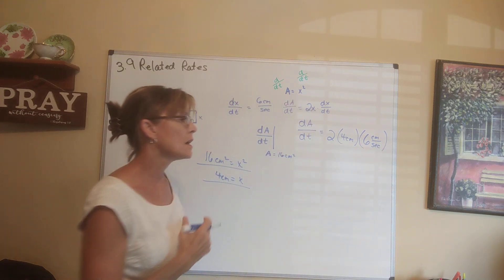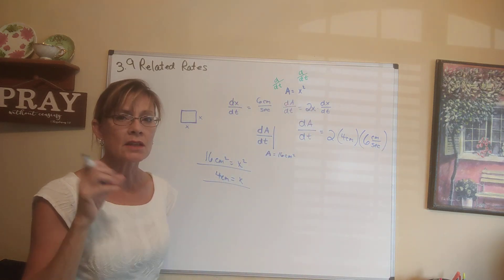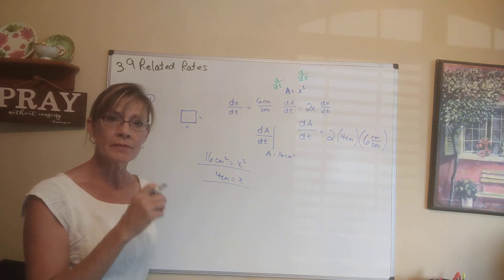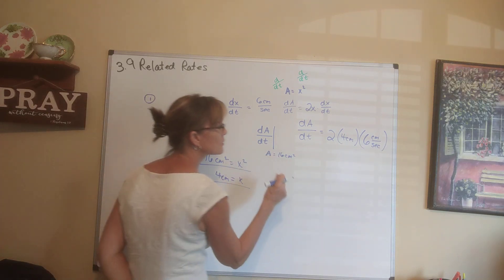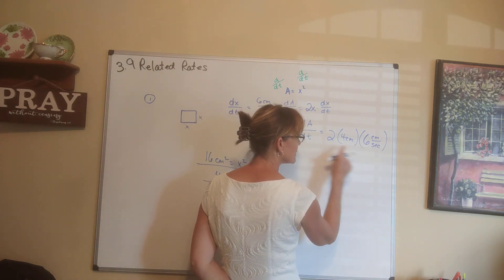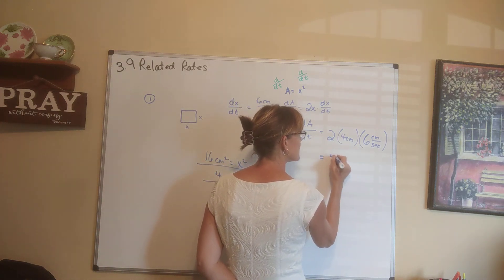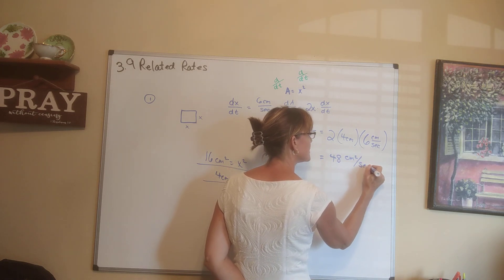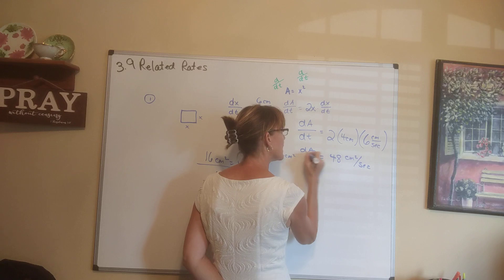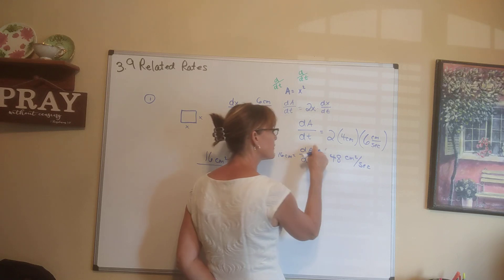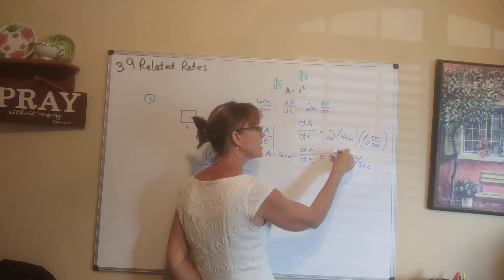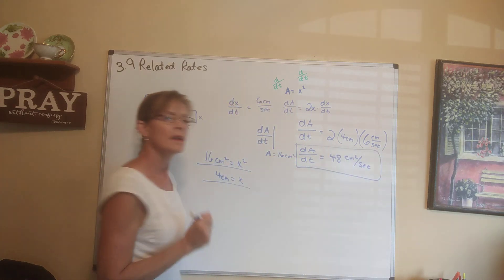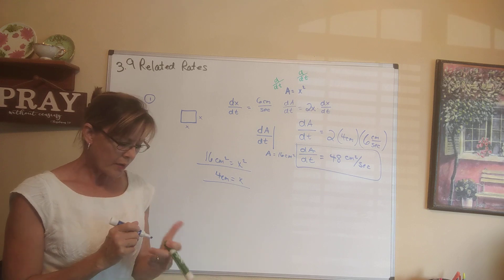What we want to keep in mind here is the units. If you write your units down, it's going to tell you if you're doing the right thing or not. Area is square something, so when we do this we'll have 4 times 2 which is 8 times 6. This is 48 square centimeters per second. That makes sense because the rate of change of area — square centimeters with respect to time, seconds — is a good answer.